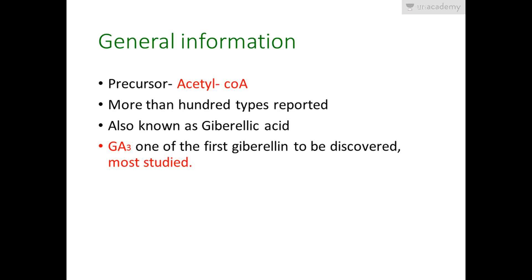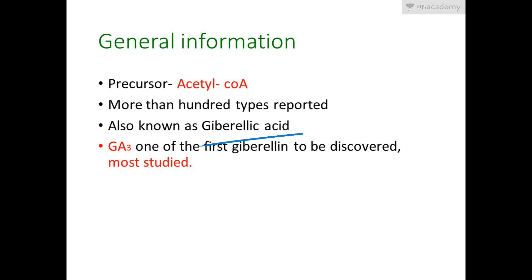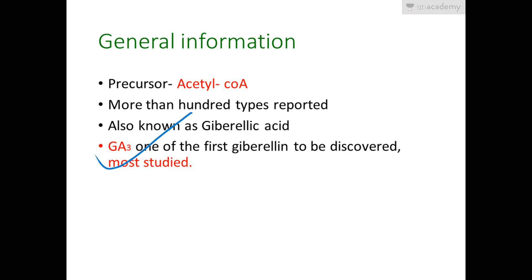Here is the general information we should know about gibberellins. Their precursor is acetyl coenzyme A. More than 100 types have been reported, with nomenclature as GA1, GA2, GA3, GA4, and so on. They are also known as gibberellic acid, which is why they are abbreviated as GA. The most extensively studied and one of the first gibberellins to be discovered is GA3 — this is a very important point from an examination perspective.